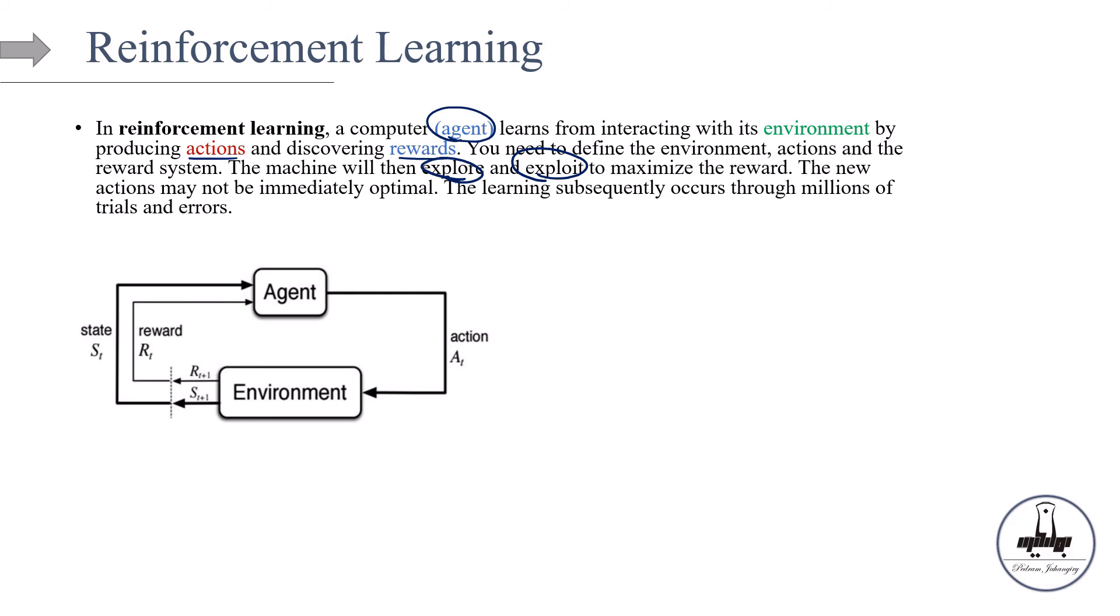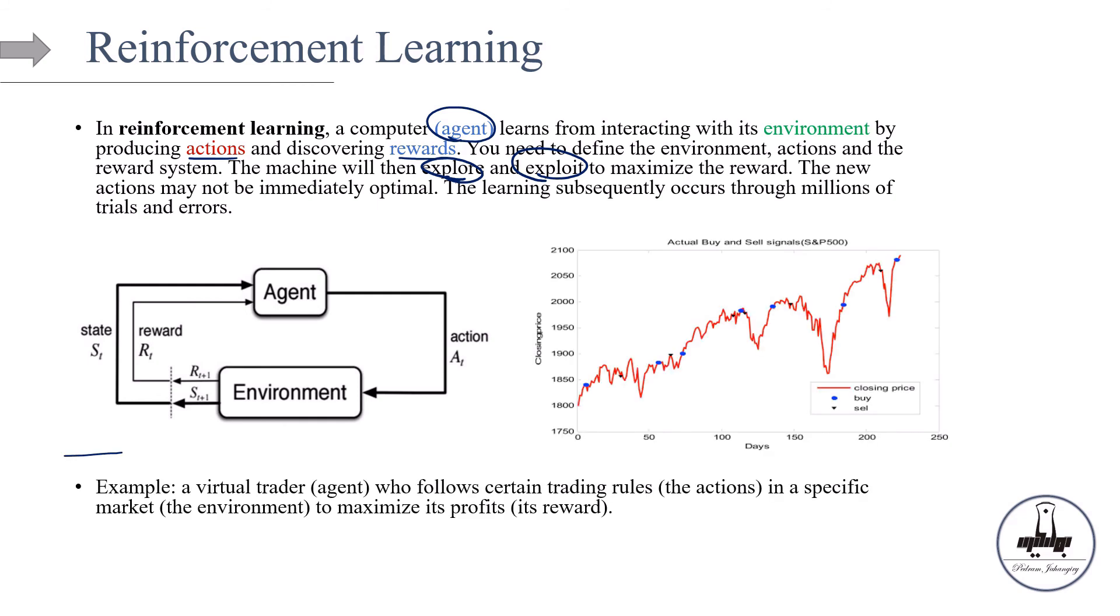But the learning happens basically through millions of trials and errors at the end of the day. OK, so let me give an example of reinforcement learning in finance. So imagine you're talking about a virtual trader. At the end of the day, you want to design an agent that's going to trade on its own. So the virtual trader, the bot, is going to be our agent here.